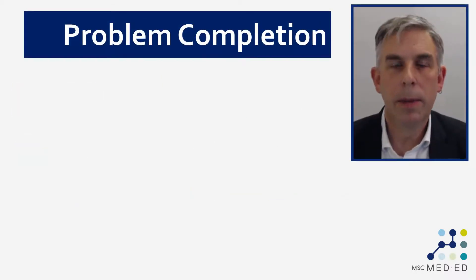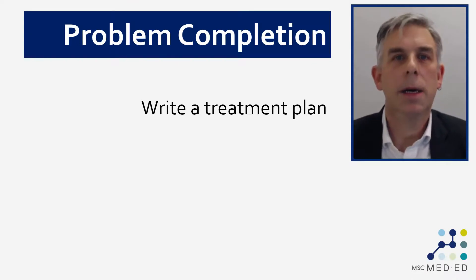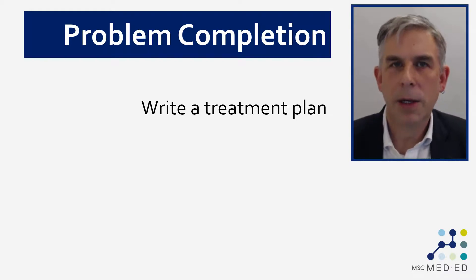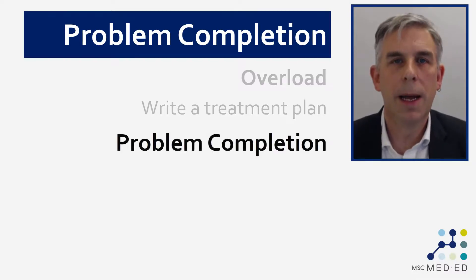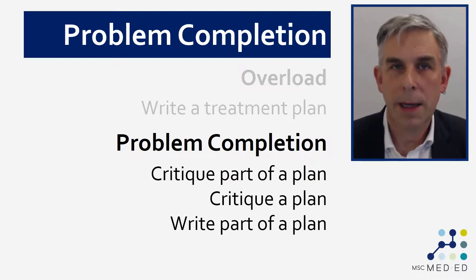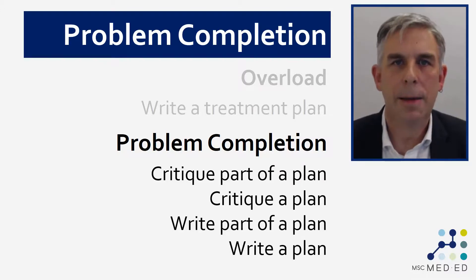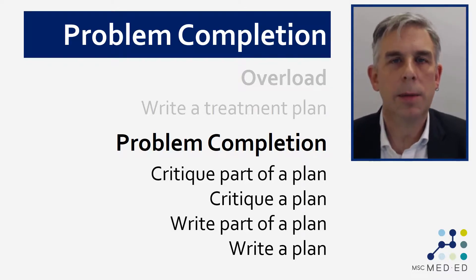Let me give you one example: the so-called problem completion effect. Let's say we have novice learners on a health professions education course and we want them to be able to write a treatment plan for a particular set of patients. If the learners are novices and don't know anything about the treatments, side effects, or drug interactions, they're going to become overloaded. By applying the problem completion effect, we break learning down into a series of steps — rather than starting by asking them to write a treatment plan, we might ask them to critique part of a plan, then an entire plan, then write part of a plan themselves, and eventually write an entire plan. A related effect is the worked examples effect, where you give learners a worked example of where you want them to get to, providing mental scaffolding that helps avoid overload.